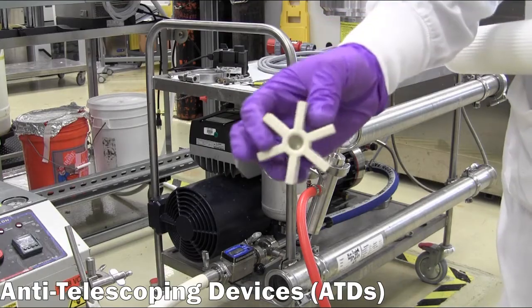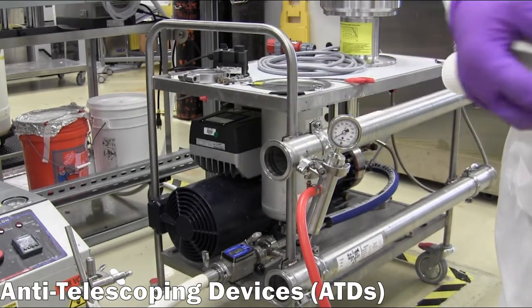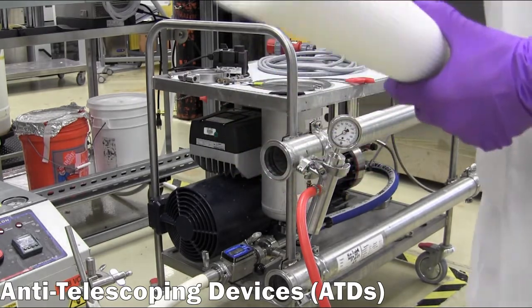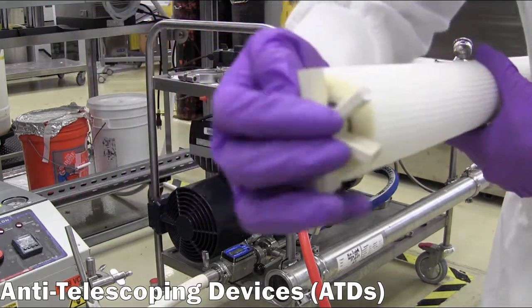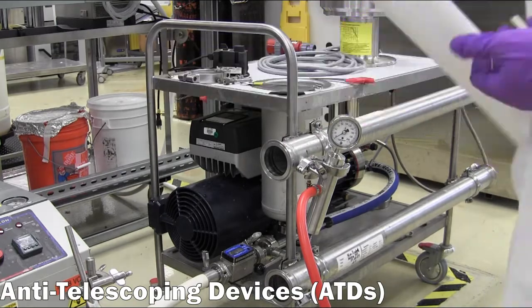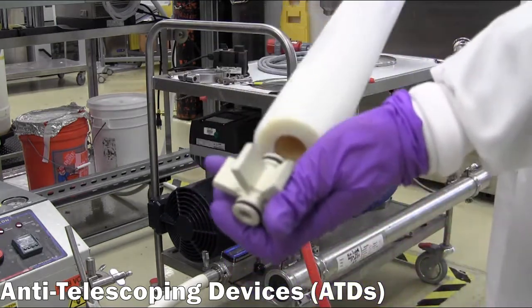The ATD, or anti-telescoping devices, are installed on the membrane. The ATD with a blank is inserted on one side of the membrane, then the ATD with a connection is inserted into the other end.